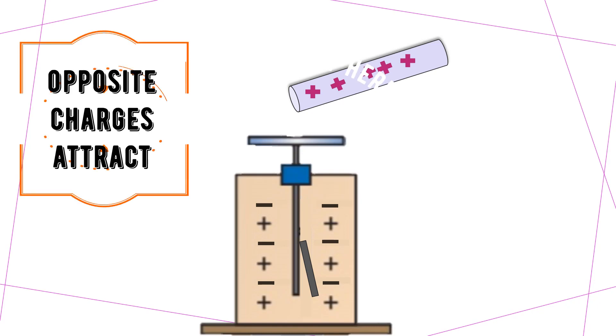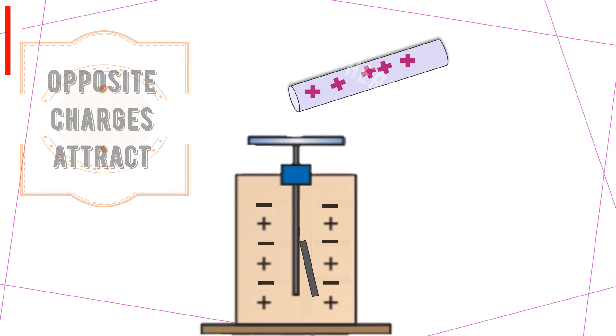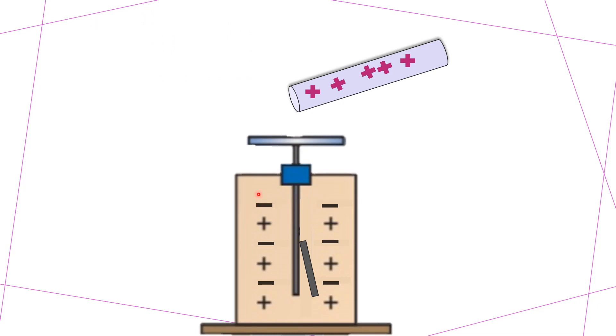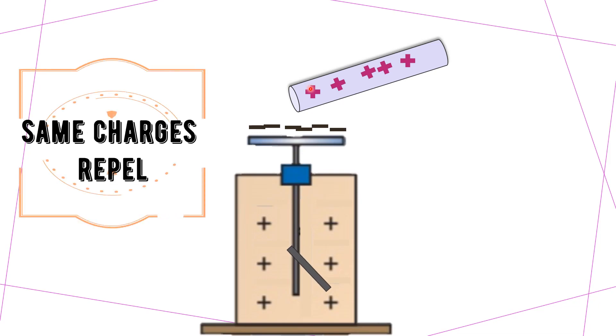Now let's test the electroscope with a positively charged object. We learned that opposite charges attract each other, and only negative charges will move. So the negative charges here will be attracted and move upward toward the positively charged object. Then both sides here are positively charged. The gold leaf will diverge because same charges repel each other.